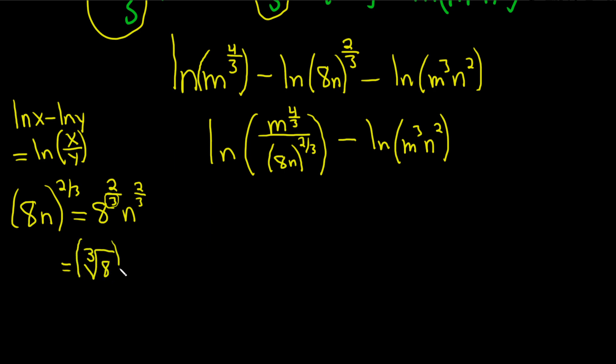And this piece here is squared. And then we have n to the two-thirds. The cube root of 8 is 2. So this becomes 2 squared n to the two-thirds. 2 squared is 4. So you get 4n to the two-thirds.